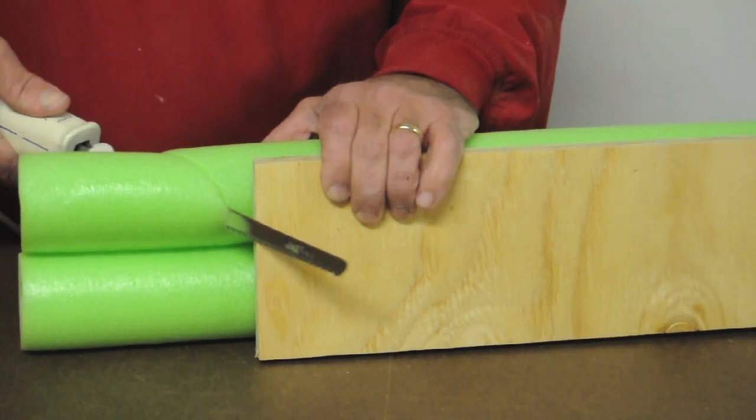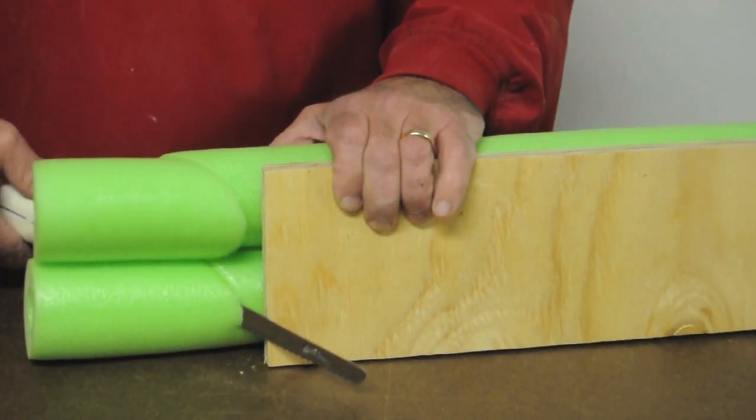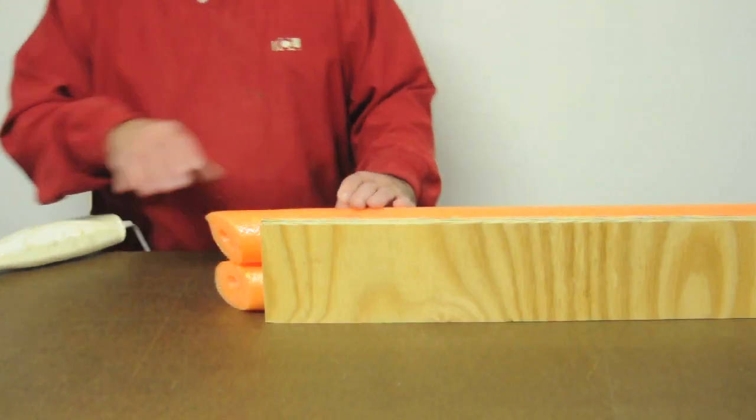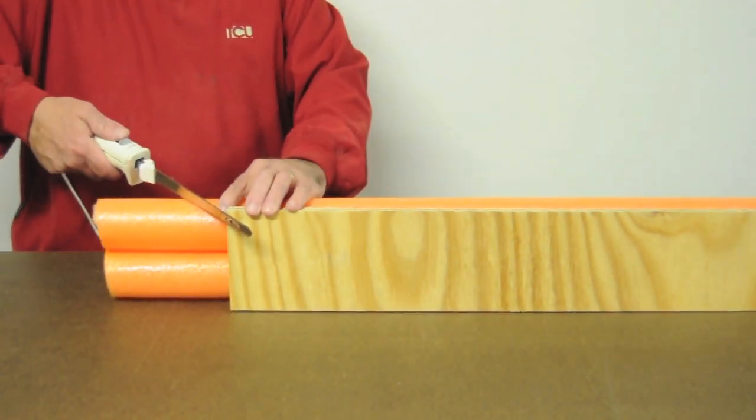Now cut the foam at a 45 degree angle, leaving about a 3/4 inch overhang off the end of the board. Repeat this process for each bumper. Make sure all angles are flaring out and not in, so the corners fit together properly.